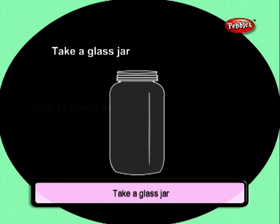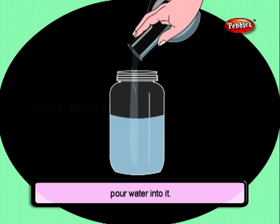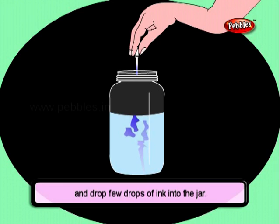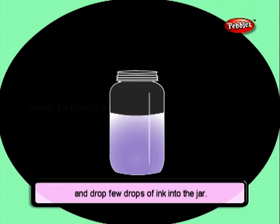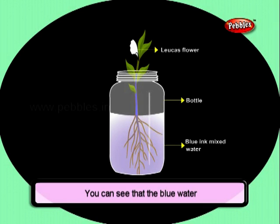Take a glass jar, pour water into it, and drop a few drops of ink into the jar. Now place a rooted Tumbai plant in the bottle. Observe the plant after a while. You can see that the blue water has been transported to other parts through the stem.